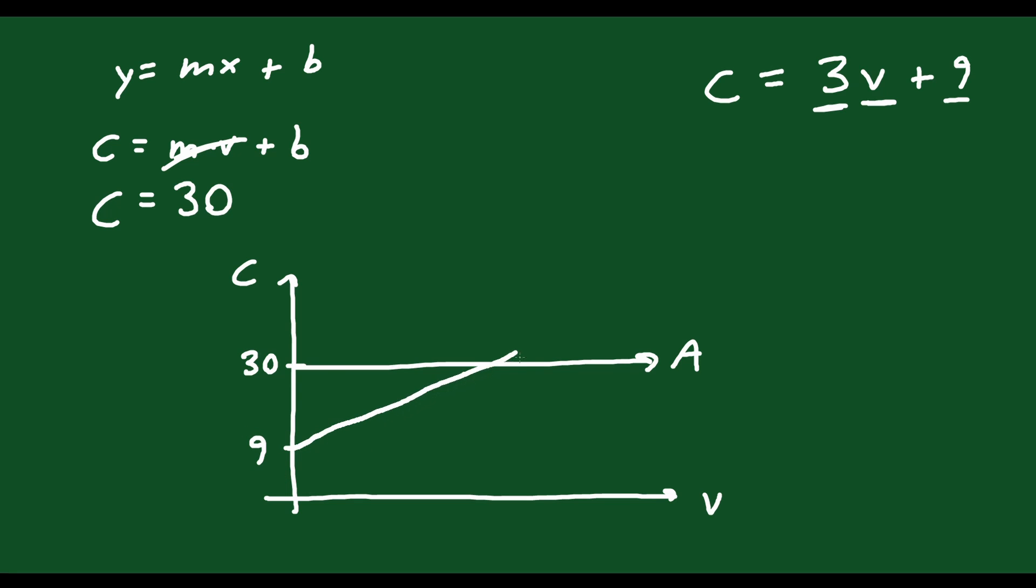But as you start renting videos, it's going to get more and more expensive, like we talked about. The more videos you end up renting, you know, if you rent 10 videos, that's another 30 bucks you got to spend, 3 times 10, plus your 9. So that'll be 39 bucks. So you can see the price increases. So that's plan B.